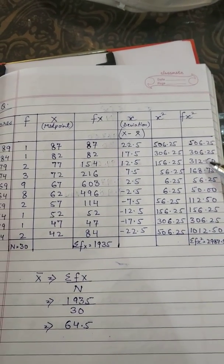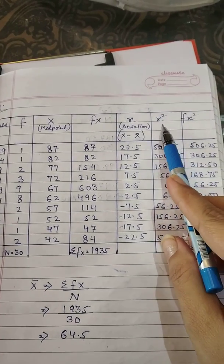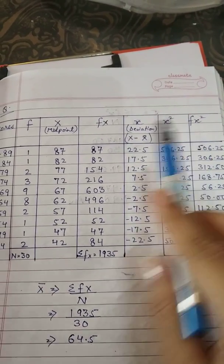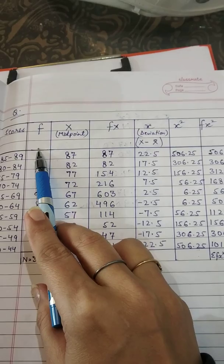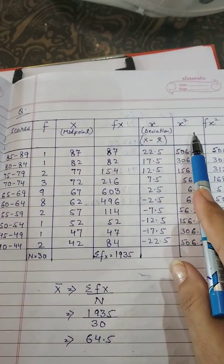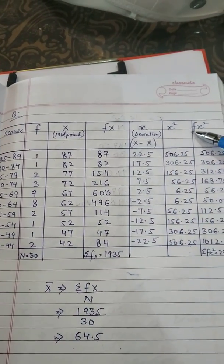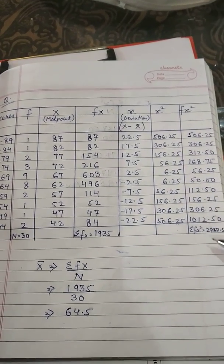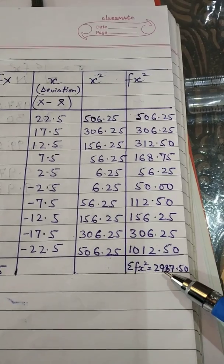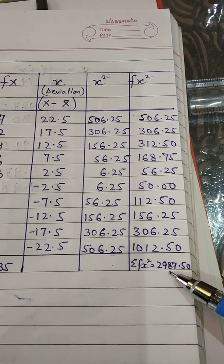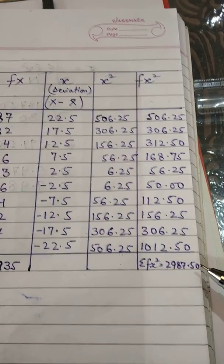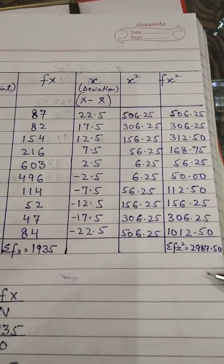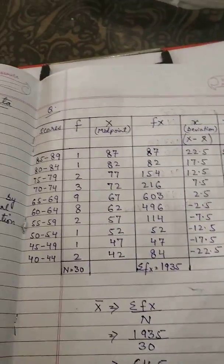Aapka this sara calculate karenghe. Aap loogokko iska total square nahin karna hai. Balki f ka multiplication, frequency ka multiplication is x square se karenghe. Then we will have fx square. Yeh aapka total aagya hai. And this is sigma fx square aapka aagya. 2987.50.